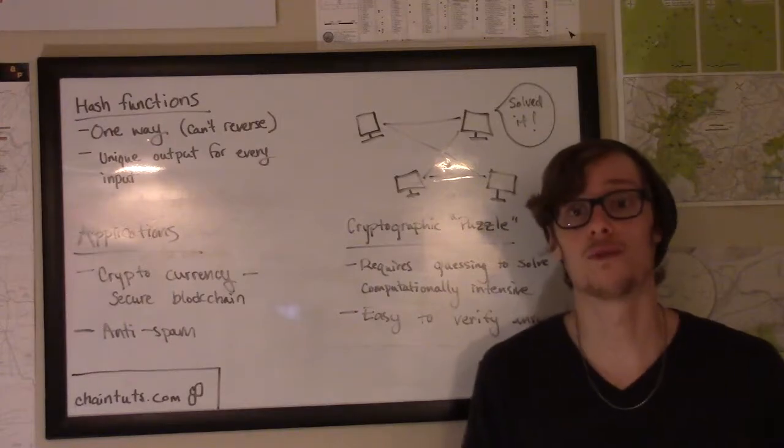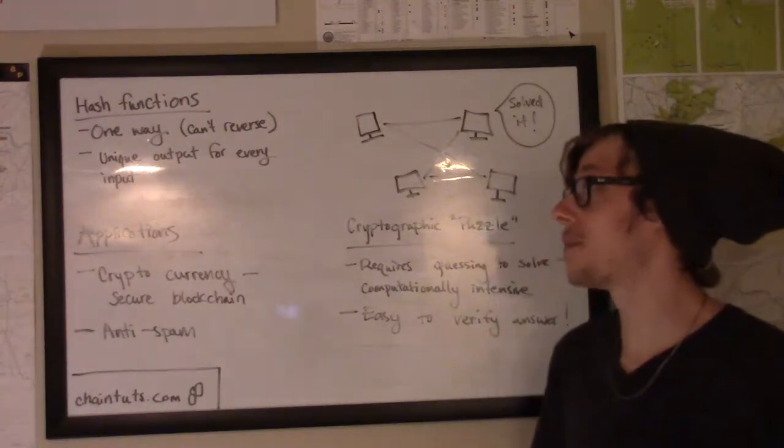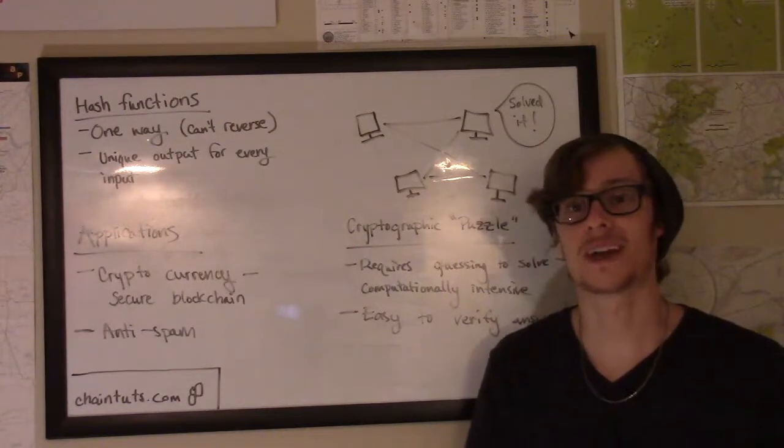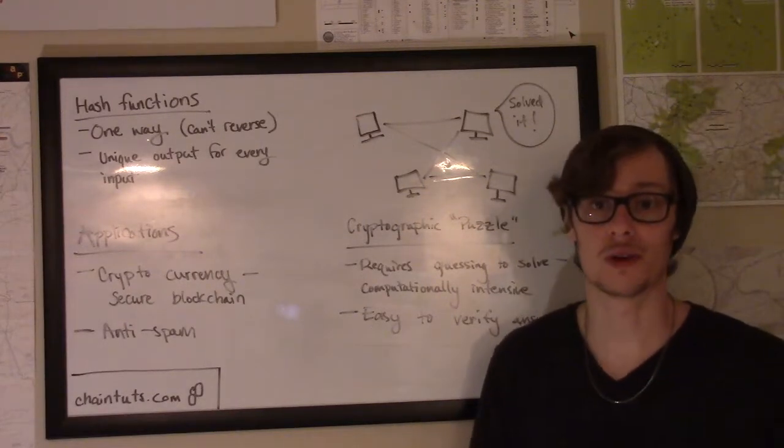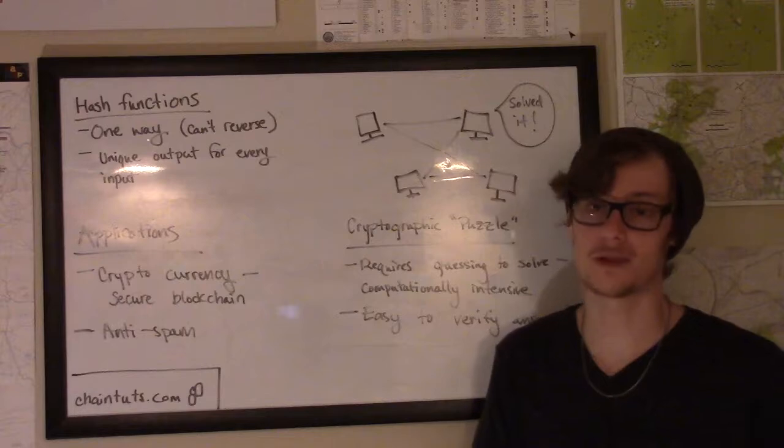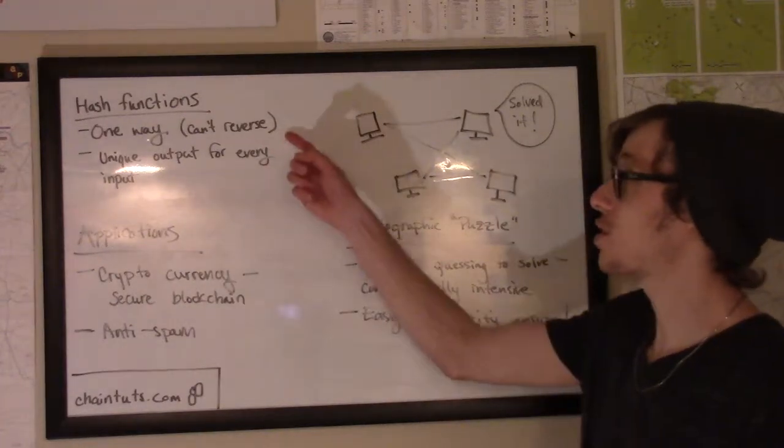Before we discuss how proof of work works, we need to talk about a computer science concept known as a hash function. Hash functions are functions written in computer code that have two unique properties to them. The first is that they're one way.